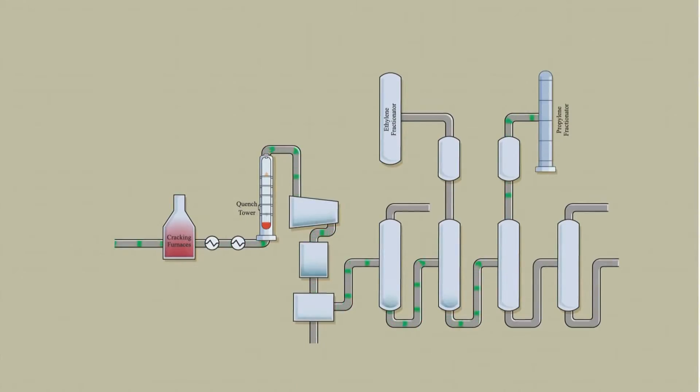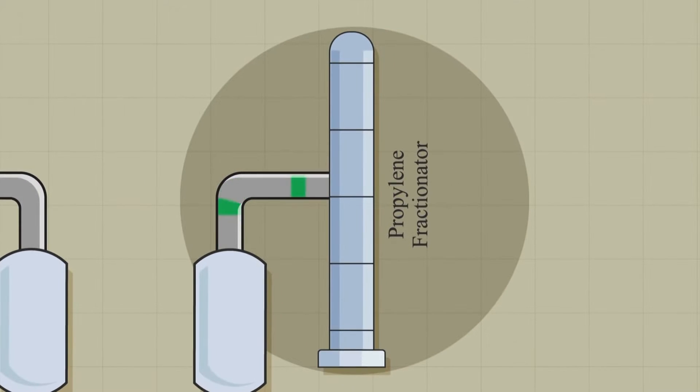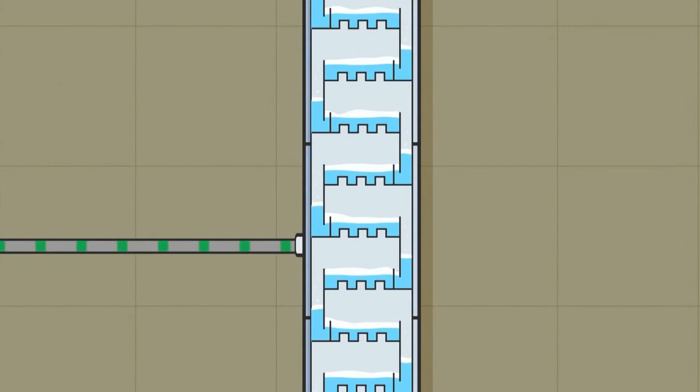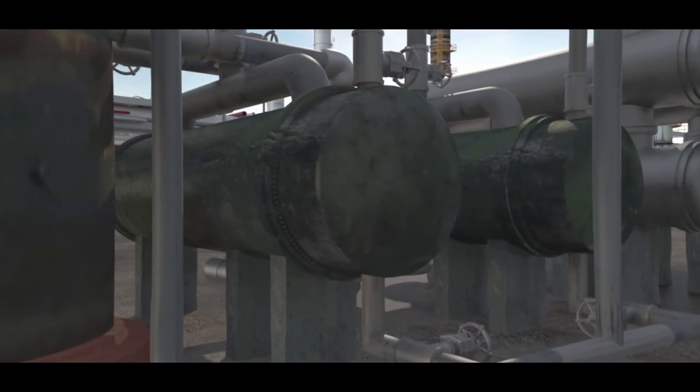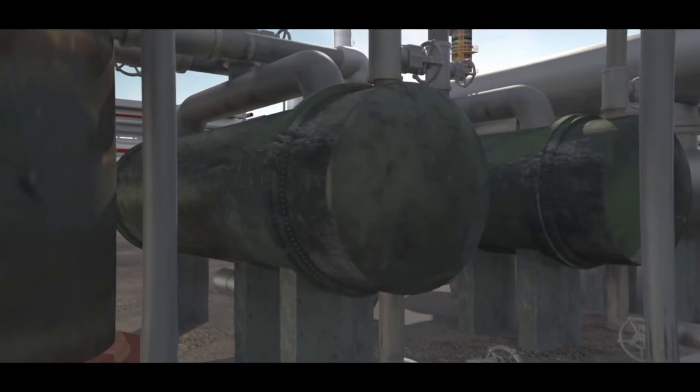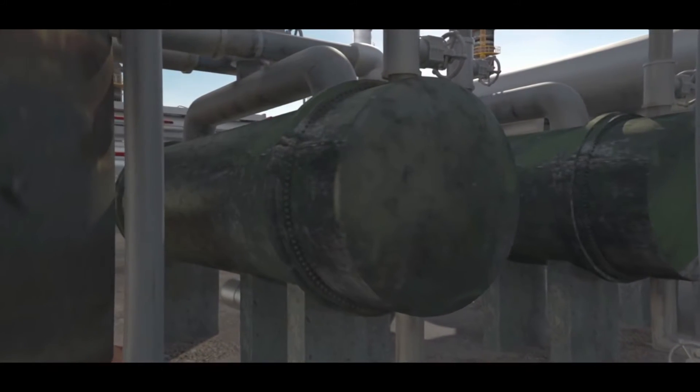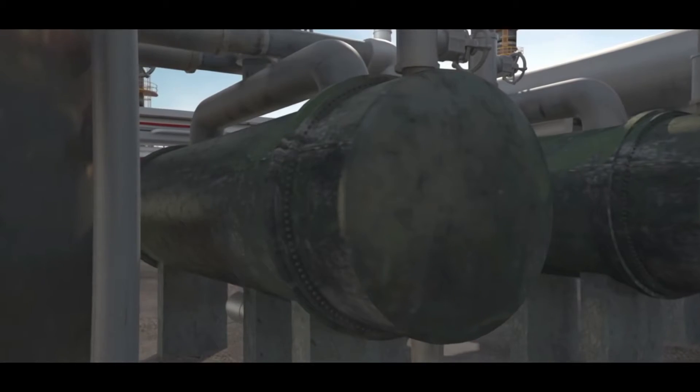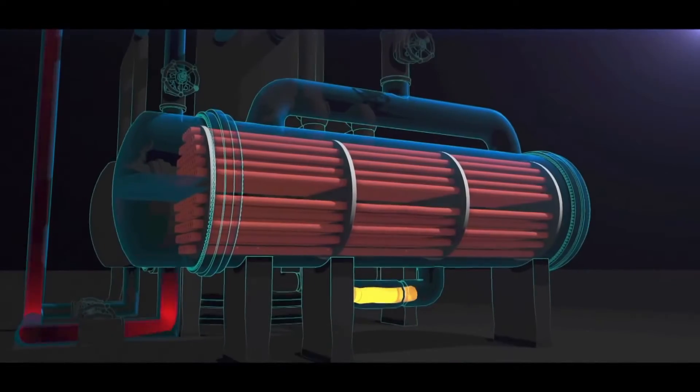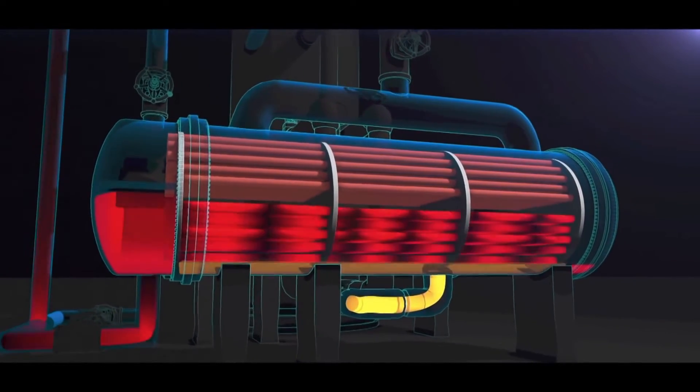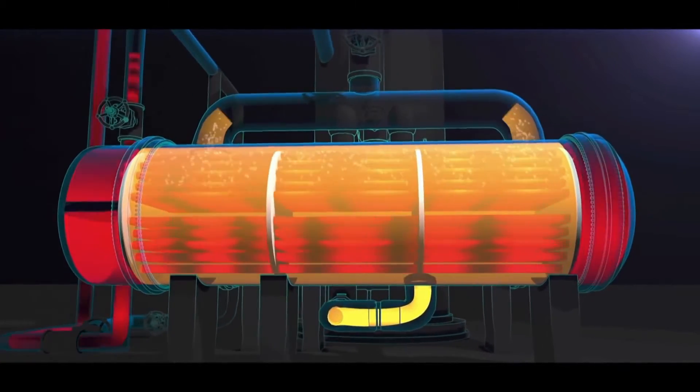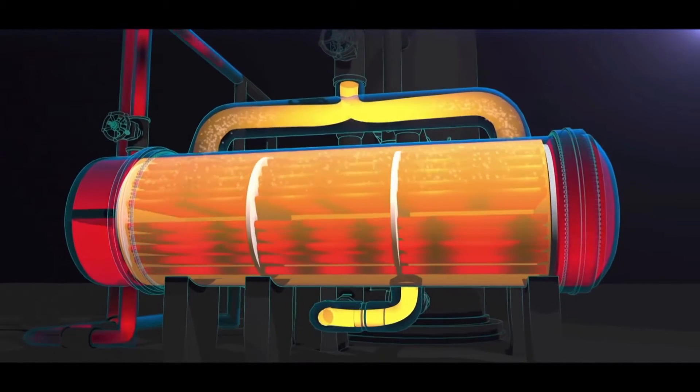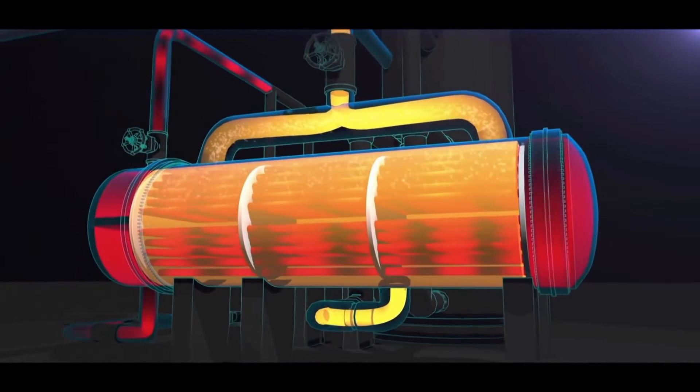Within the Williams process is a distillation column called the propylene fractionator. It separates a mixture of propane and propylene. Heat exchangers called reboilers supply heat to the fractionator to boil the propane and propylene mixture, which is essential to the separation process. The reboilers are shell and tube heat exchangers. Hot water flows through the tubes, heating and vaporizing propane that flows through the shell and back to the propylene fractionator.